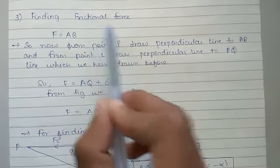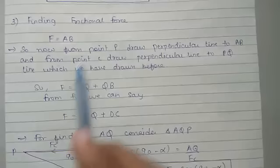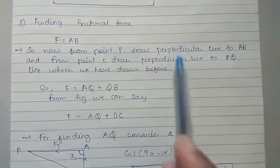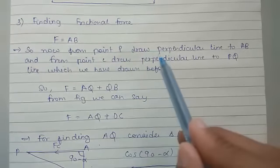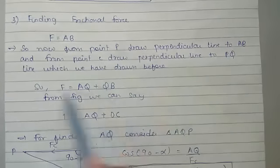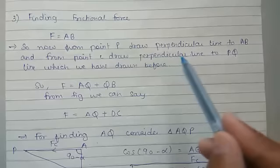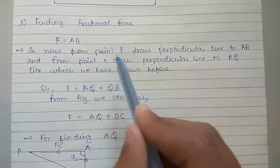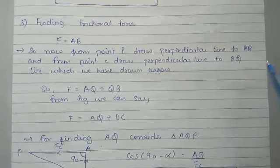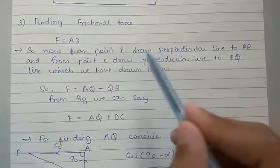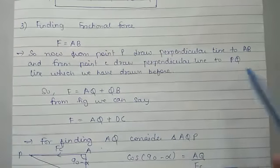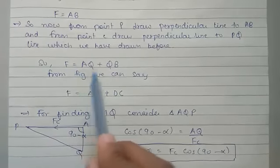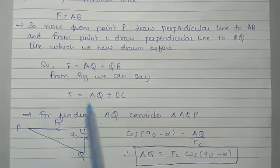Next, finding frictional force F. F is equal to AB. To find F, we draw a line from point P perpendicular to AB, and from point C draw a perpendicular to PQ. So F is equal to AQ plus QB. From the figure we can say F is equal to AQ plus DC.